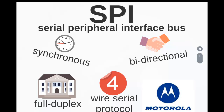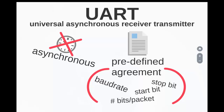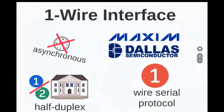The next protocol is SPI, the Serial Peripheral Interface bus, introduced by Motorola. SPI is a single-master, multi-slave system, though it is possible to have more than one master provided only one is active at any given time. SPI is synchronous, with the master providing the clock. Communication is bidirectional, and since it is full-duplex, both devices can communicate at the same time. SPI is a four-wire serial protocol.